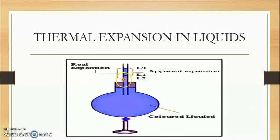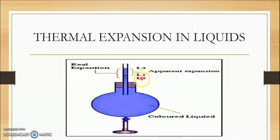In the diagram, the liquid level goes from L2 to L3 — that is the real expansion. The level from L2 to L1 going back up represents the apparent expansion, and L2 to L3 is the real expansion.